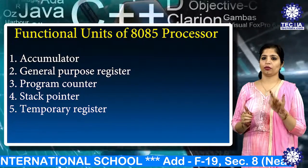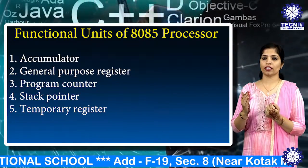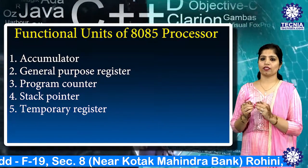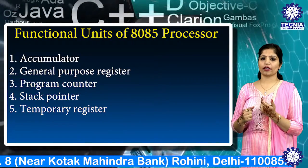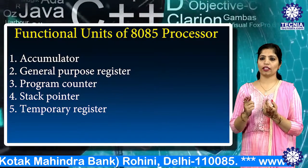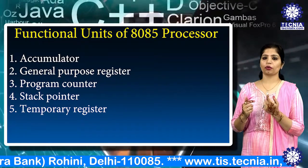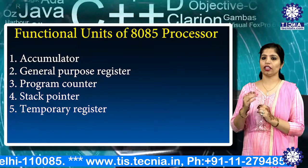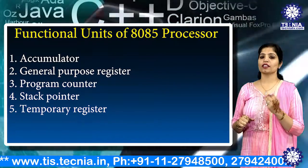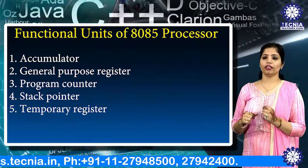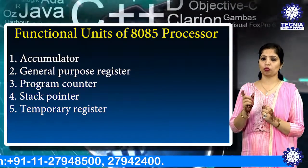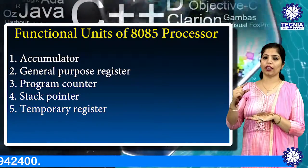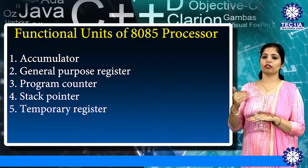The third function is the program counter. The program counter is a 16-bit register used to store the memory address location of the next instruction to be executed. The microprocessor increments the program counter whenever an instruction is executed, so it points to the memory address of the next instruction. The next function is the stack pointer, which is also a 16-bit register that works like a stack, always incremented or decremented by 2 during push or pop operations.